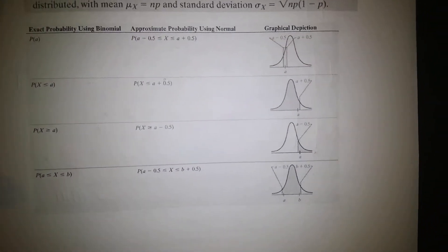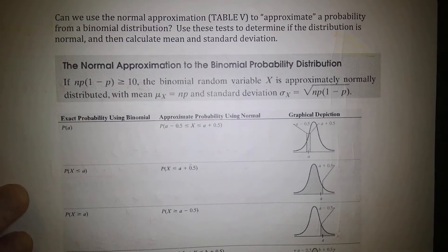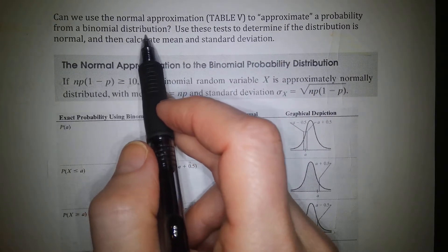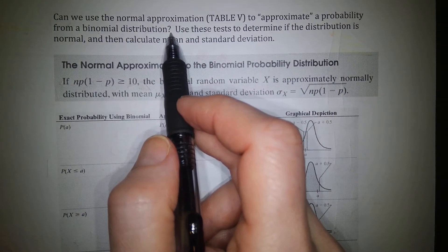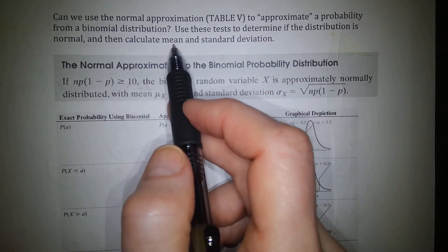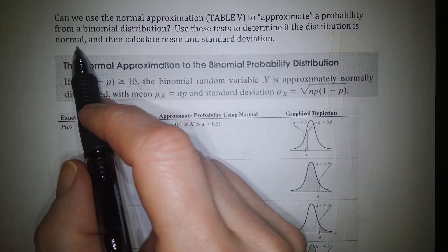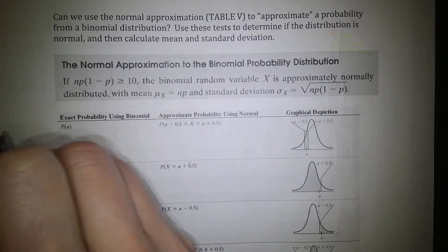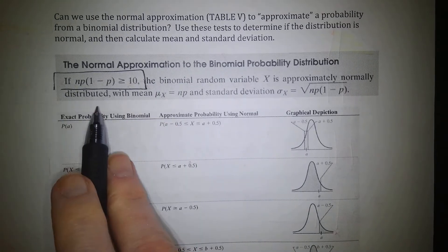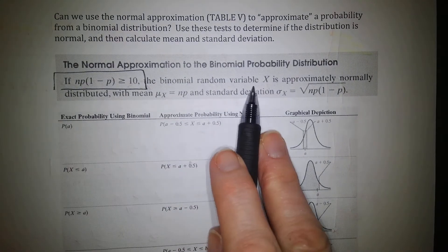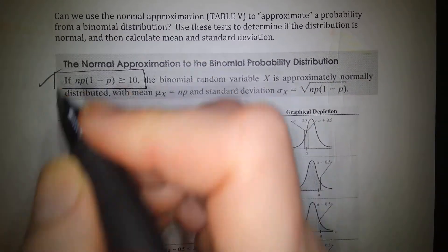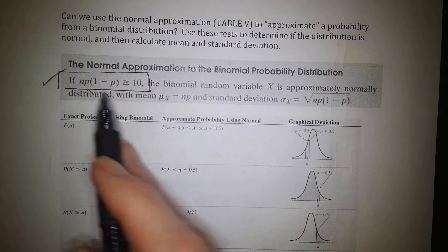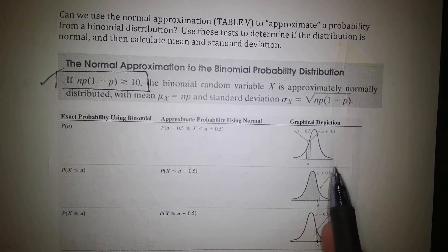We need to define a couple of things. Can we use the normal approximation — Table 5 — to approximate a probability from a binomial distribution? To answer that, we have to pass a test. We need to determine whether it's normal first, then calculate the mean and standard deviation. In order to determine whether it is normal, we must prove that n·p·(1−p) ≥ 10. If this is true, the binomial random variable x is approximately normally distributed and we can use normal methods.